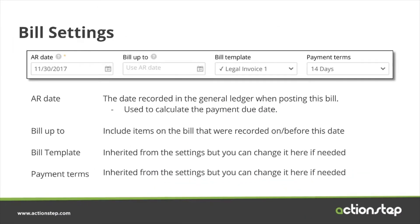The bill settings at the top include the accounts receivable date. This is the date that you want recorded to the general ledger when you post the bill, and this is also the date that will be used to calculate the payment due date. The bill up to date will default to the accounts receivable date, but you can set this to a different date if you wish. This date tells the system which items to include on the bill — any items posted or recorded on or before this date will be included by default, but you can edit them later. The bill template is inherited from the firm settings, but if you need a specific layout for this matter, you can change it here. And the same thing for payment terms — the defaults will show, but if you have different payment terms for this particular matter, you can change it here.